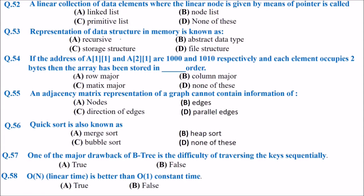A linear collection of data elements where each node is given by means of a pointer — is it a linked list or something else? The answer is of course a linked list, as that matches the definition. Next: representation of a data structure in memory is known as ADT, abstract data type — a mathematical model along with the set of operations, such as push and pop for a stack.